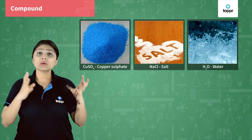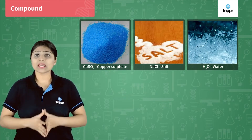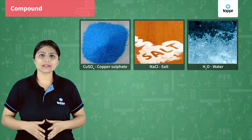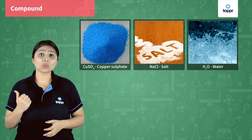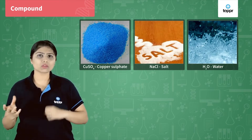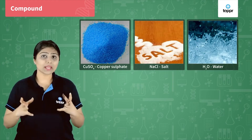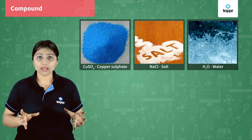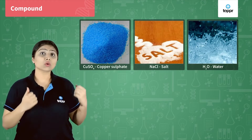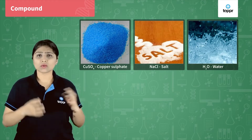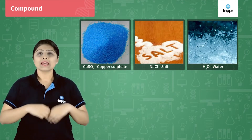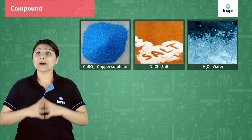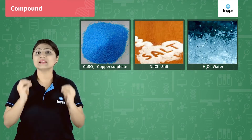Now, can you subdivide a compound into its constituent elements? That means can you break down water into hydrogen and oxygen? Can you break down sodium chloride into sodium and chlorine? Can you break down copper sulphate into copper, sulphur, and oxygen? Yes, we can do that, but only by chemical means.